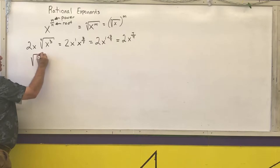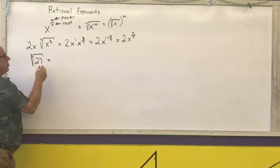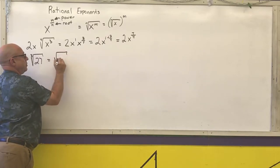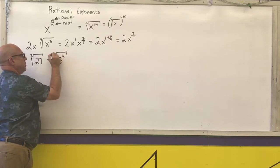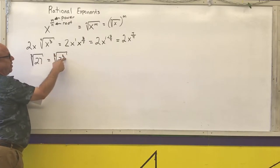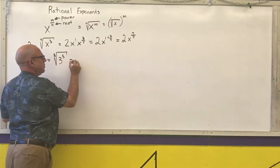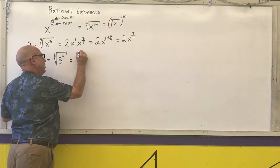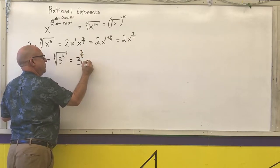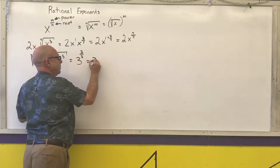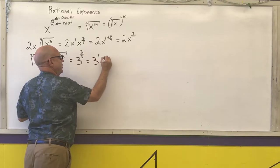Here's another way you can think about cube roots. I know 27 is three-cubed. This is a power, that's the root. Power over root. Simplify. And I just get three.